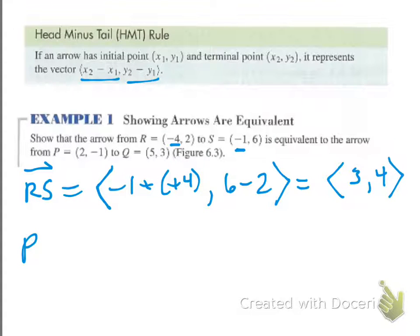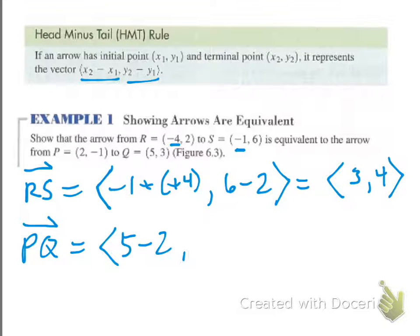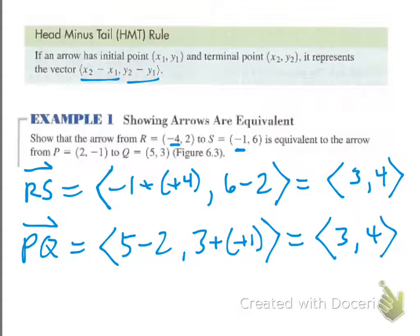Now PQ — we're hoping it turns out to be ⟨3, 4⟩ as well because we want them to be equal. So: 5 minus 2 is 3, and 3 minus negative 1 is 4. They are both equivalent. They're in different places on a graph, but they're the same vector — they have the same components, just in different locations.